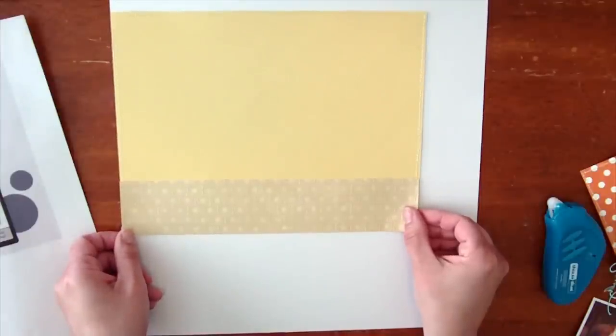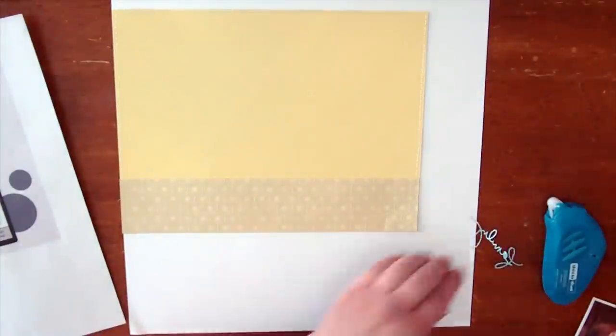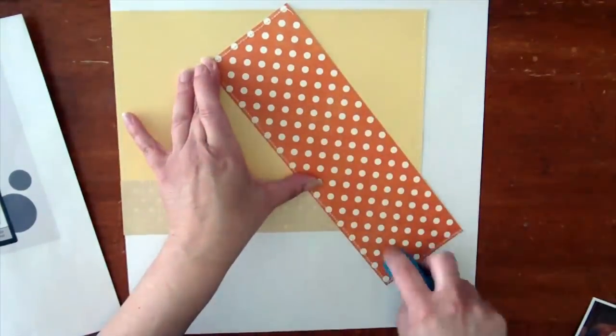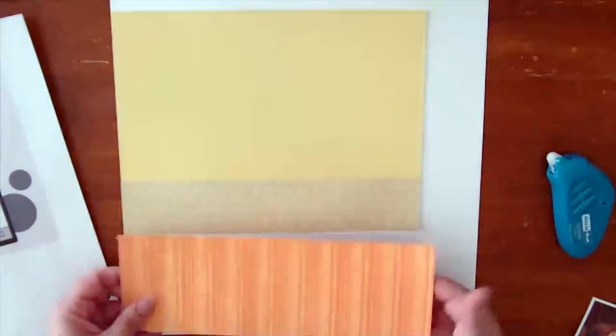Then I'm going to add some Bo Bunny craft colored paper, and then at the very bottom this is some Echo Park Dots and Stripes pattern paper.